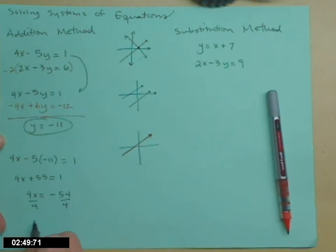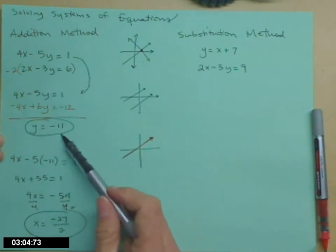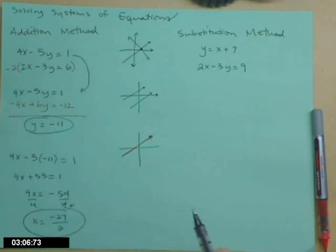And divide both sides by 4. x equals, let's see, we can take out a 2 at least. Negative 27 halves. We get the same answer if you plugged that y value into the second equation and solved for the x in that one.